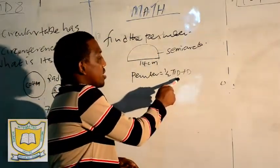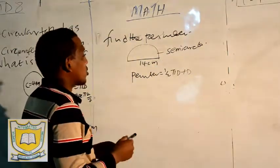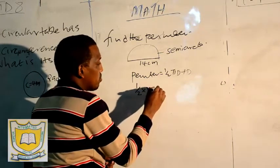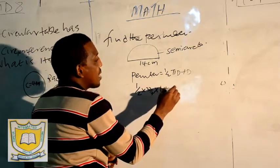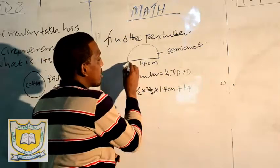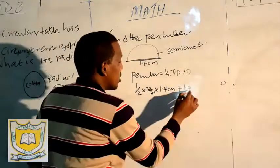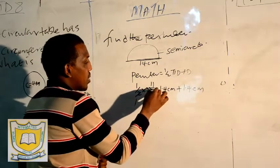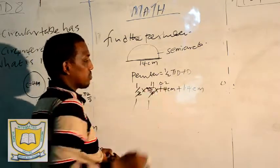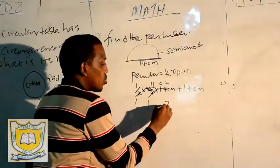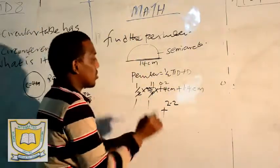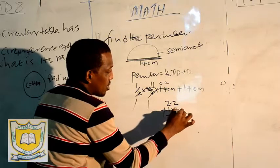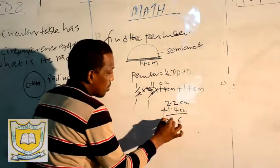So we follow the formula. We say half times 22 over 7 times 1.4 centimeters plus D, which is 1.4. Dividing: by 2 gives 1, by 2 gives 11, by 7 gives 1, by 7 gives 0.2. Then 11 times 0.2 gives 2.2. Plus this line — the line is full, not dotted — so plus 1.4 centimeter.